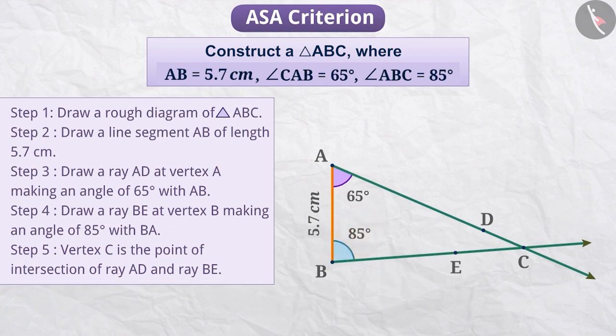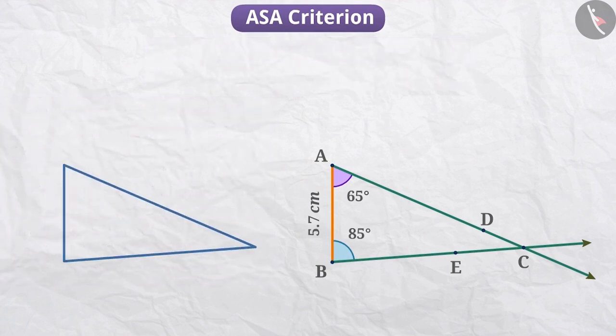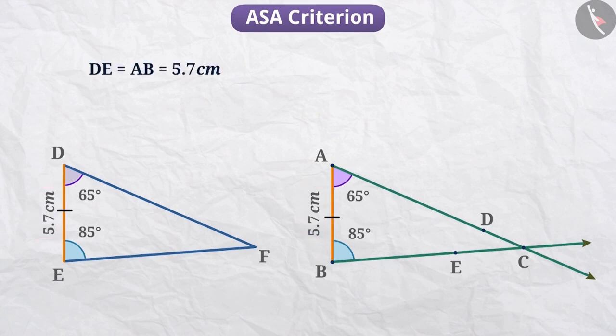Using the same method, we will construct another triangle, triangle DEF, where DE is equal to AB is equal to 5.7 cm, angle FDE is equal to angle CAB, which is equal to 65 degrees and angle DEF is equal to angle ABC is equal to 85 degrees.